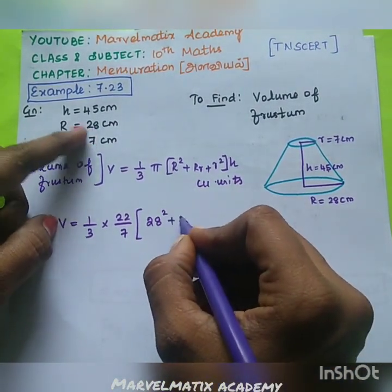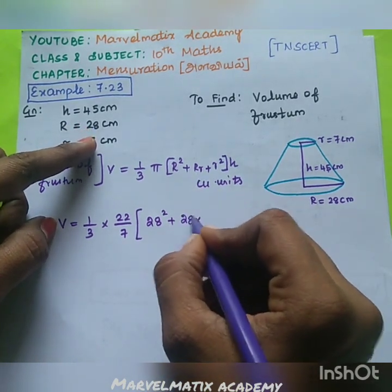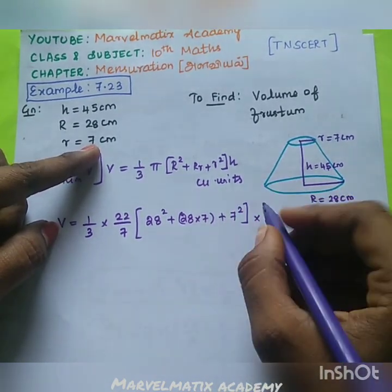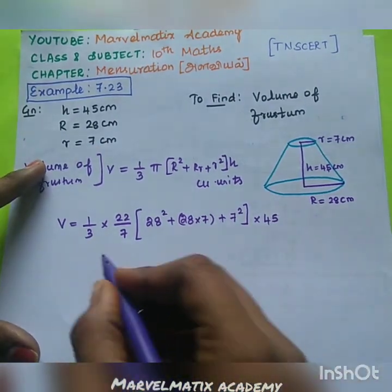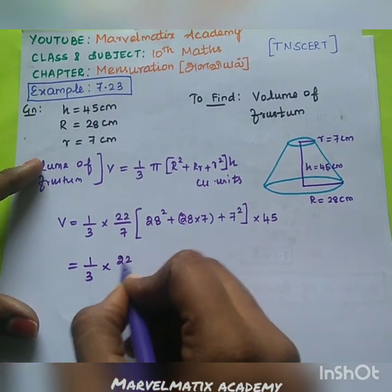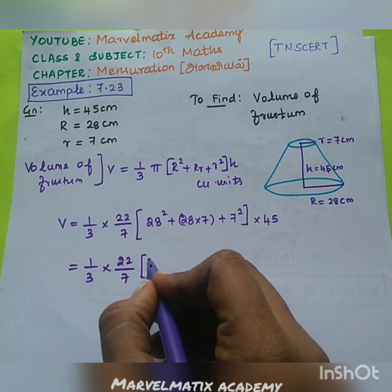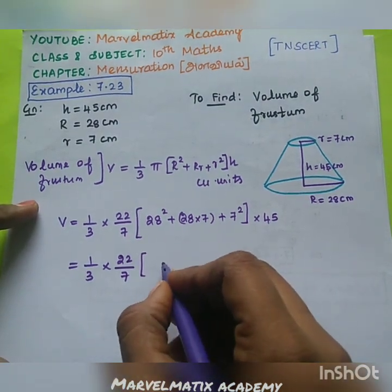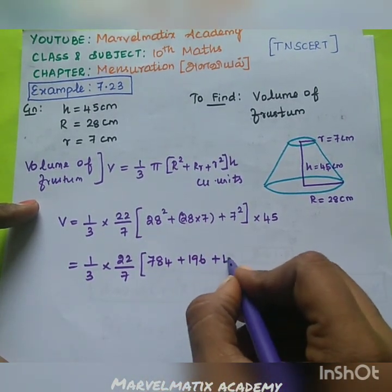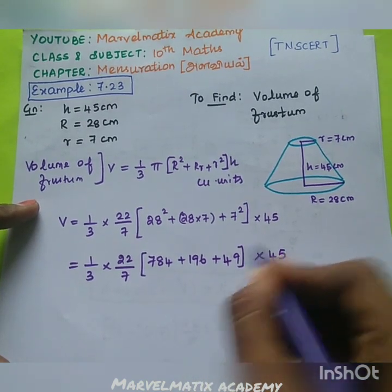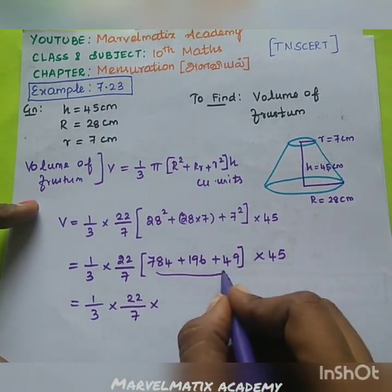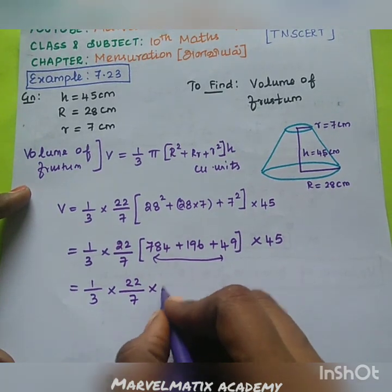So capital R = 28, small r = 7, and H = 45. This gives us: 1/3 × (22/7) × (28² + 28×7 + 7²) × 45. So 28² = 784, 28×7 = 196, 7² = 49. Into 45. So 1/3 × 22/7 × 1029 × 45.